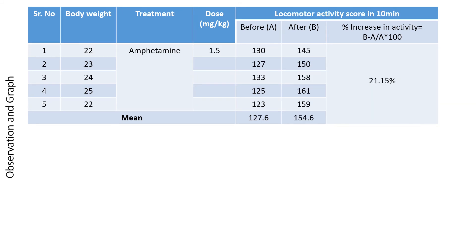The next drug is amphetamine, a CNS stimulant. Before amphetamine, the activity scores in 10 minutes were 130, 127, 135, 133, 125, and 123, giving a mean of 127.6.